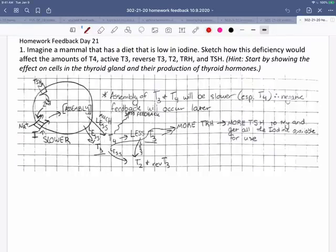Today's homework problems had you working on the system that regulates metabolic rate with the thyroid hormones. This first one was a mammal that has a diet that's low in iodine, and how would that affect the amounts of T4, T3, reverse T3, and T2, and TRH and TSH.